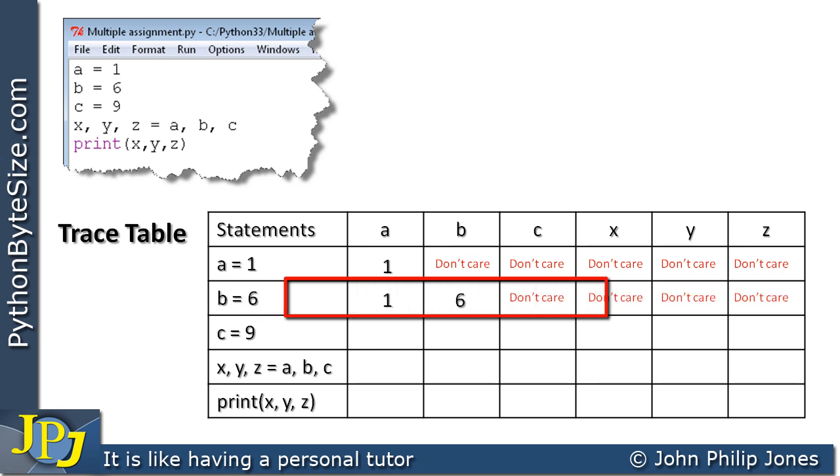When this particular statement executes, b is assigned six, and we will get the following. In this particular column we will get b with the value of six. The key when you do a trace table is to make sure you show what's in a. And of course a will be one. I've just copied this one down from the previous row.